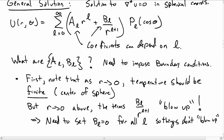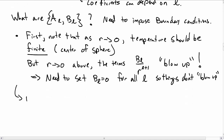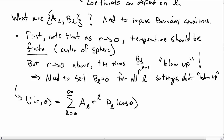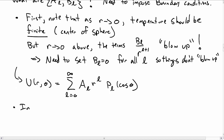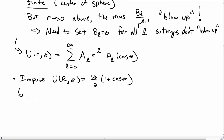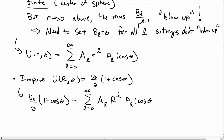That gets rid of fully half of our coefficients. So what we're left with for the temperature inside the ball is a sum over all l of a_l times r^l times P_l(cos θ). Now let's impose our boundary condition at r = R as a function of θ. From the previous video, that was u₀/2 times (1 + cos θ). So that tells us that u₀/2 times (1 + cos θ) must equal the infinite sum from l = 0 to infinity of a_l times R^l times P_l(cos θ).